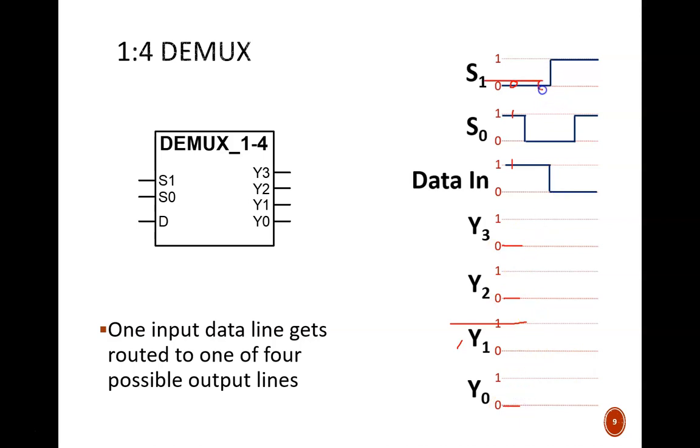In the next time slot, the select code 00 indicates Y0 is chosen. The data input is high, so Y0 becomes high. All other outputs are low.